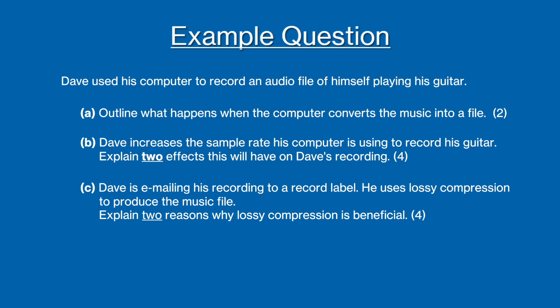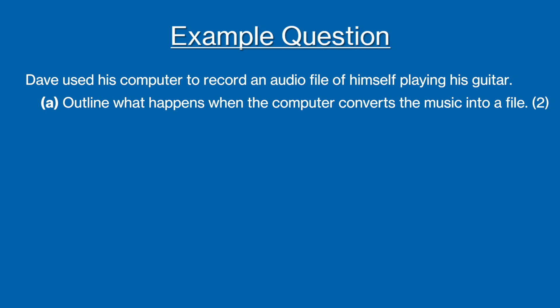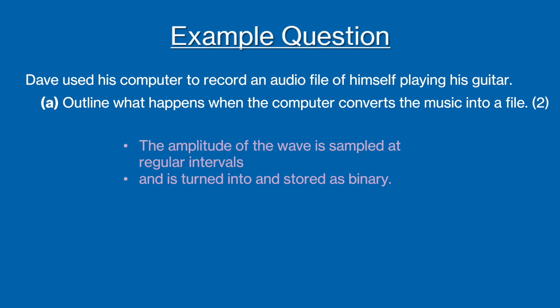Okay, so for part a you are being asked to outline what happens when the computer converts the music onto a file. This is talking about sampling, and we know that in sampling the amplitude of the wave is measured at regular intervals, and it is then converted into binary so that it can be understood by the computer. The key thing with this question is to realize that the question is asking you about sampling, then you just need to recall what happens when sampling takes place.